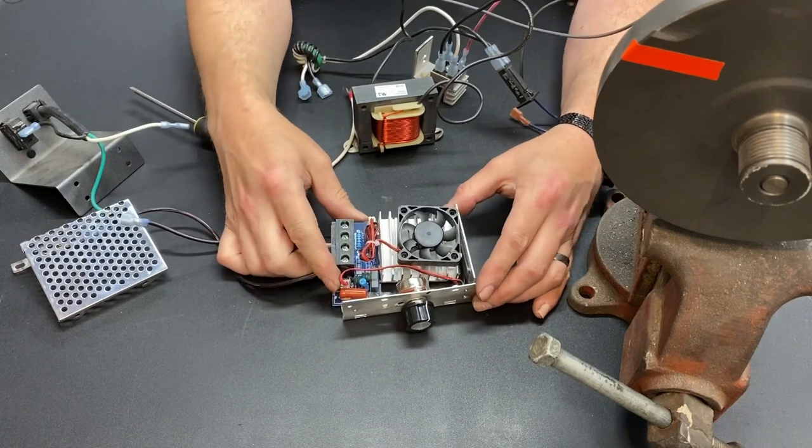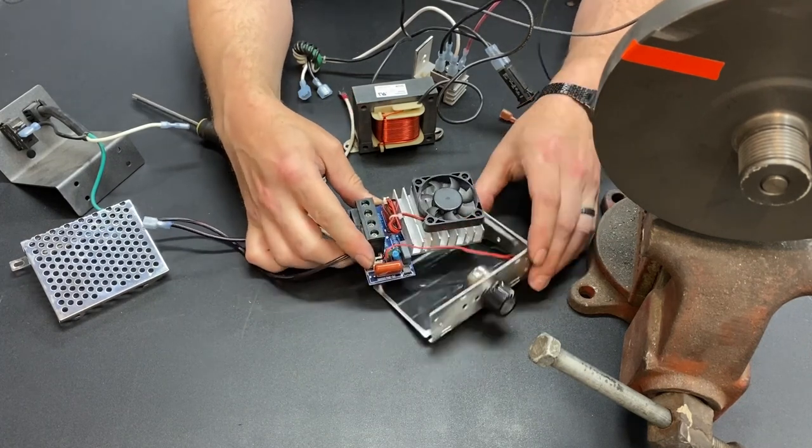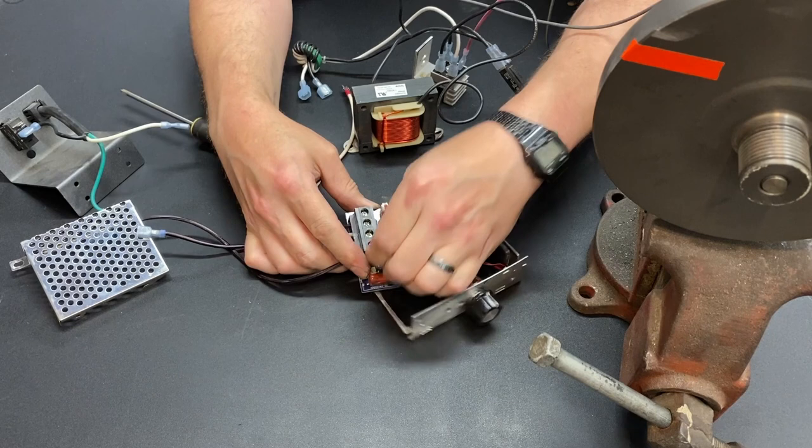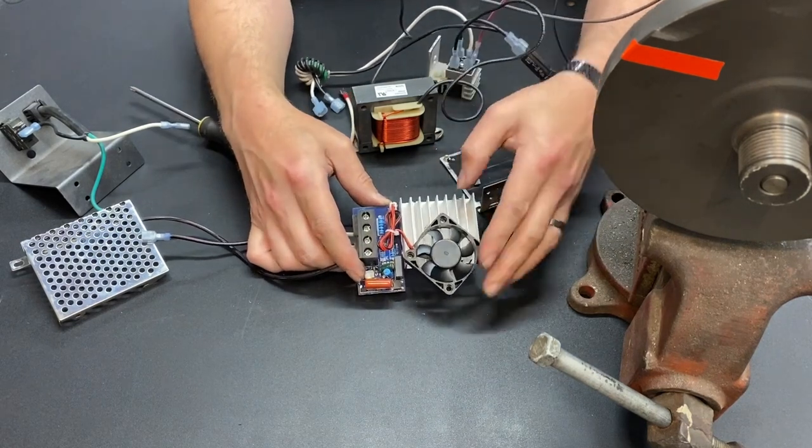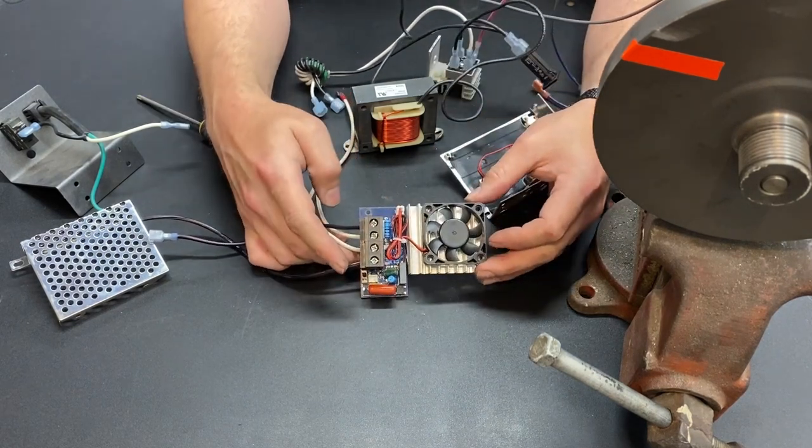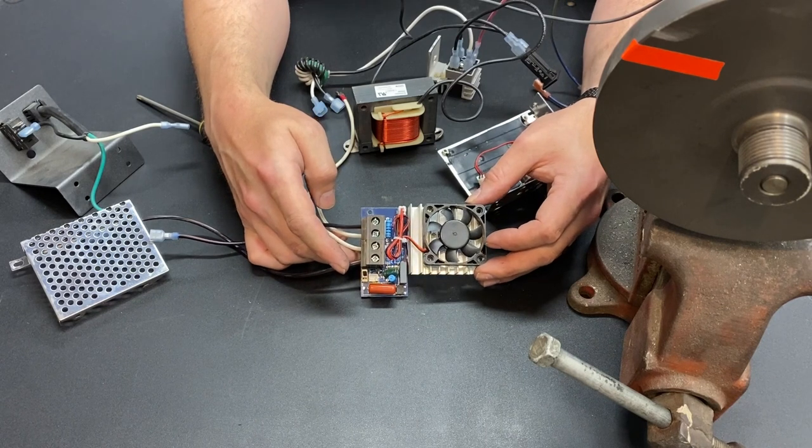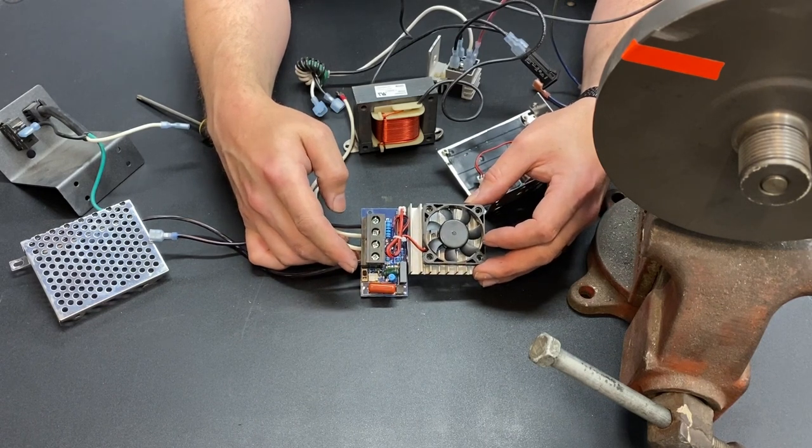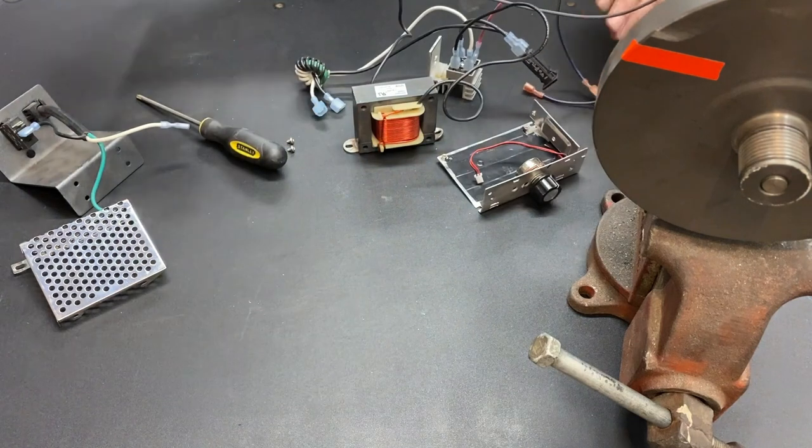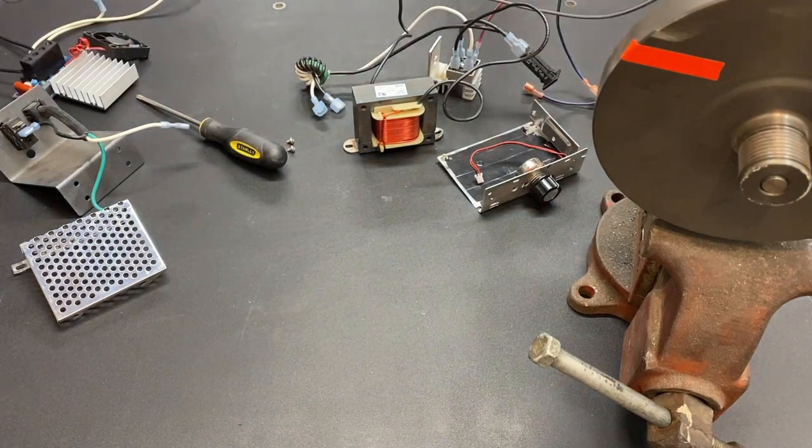And here we have the basic unit right here. Now, like I've said in previous videos, this is part of why I like the SCR voltage controller a little better than some of the other options, because the circuit board is so small and compact. You can easily fit that into whatever power supply you're building.